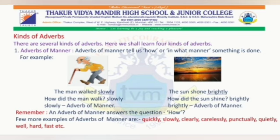Let's see the next example. The sun shone brightly. How did the sun shine? Brightly. Here, the word 'brightly' is an adverb of manner. Remember, an adverb of manner answers the question 'how.' A few more examples of adverbs of manner are: quickly, slowly, clearly, carelessly, punctually, quietly, well, hard, fast, etc.